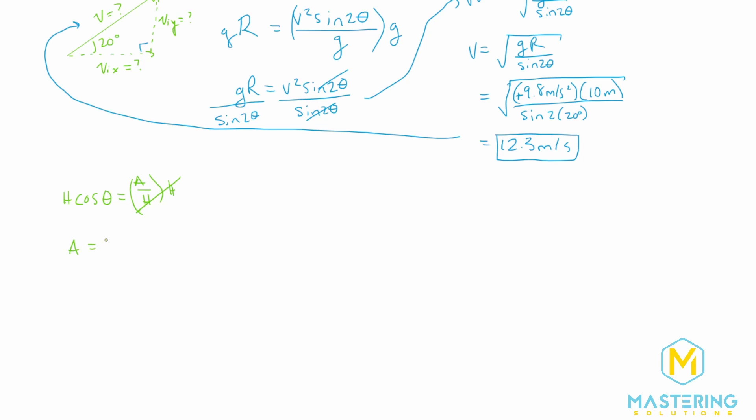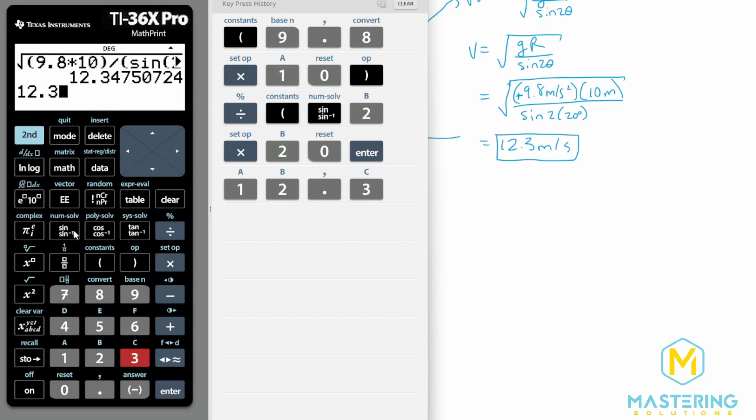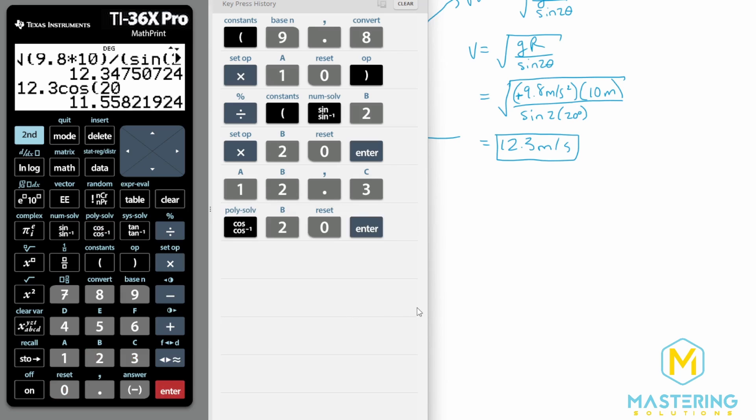So adjacent is equal to h cosine of theta, and the adjacent in this case is the initial velocity in the x direction, so the x component of the initial velocity. And the hypotenuse is 12.3 meters per second. We'll times it by the cosine of theta, which we said is 20 degrees.